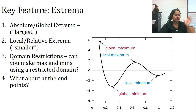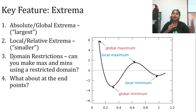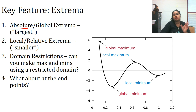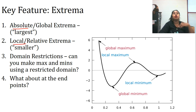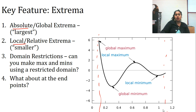Moving on to key features — three things: extrema, end behavior, and even and odd polynomials, not functions. Extrema, or max and min, actually has two different types: the absolute or global, and the local or relative extrema. Your global max is the highest point. If you have a restricted domain, as shown here, that endpoint can still be a global maximum — an important concept that is actually one of the fundamental theorems in calculus.